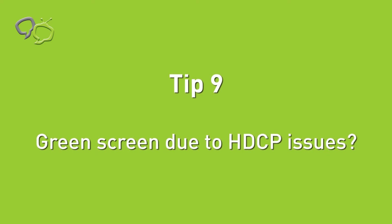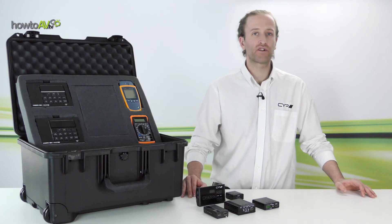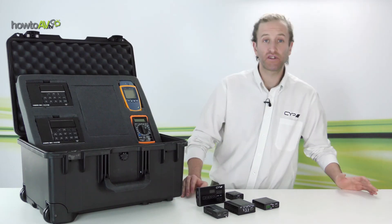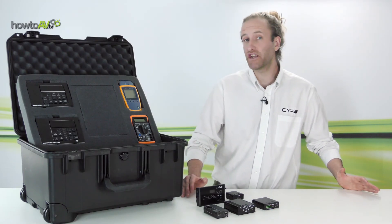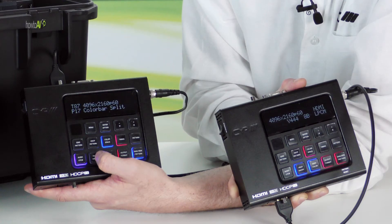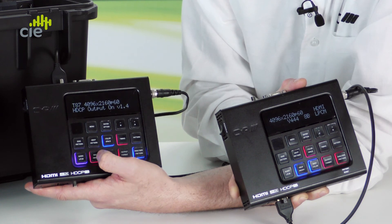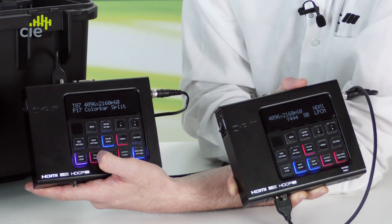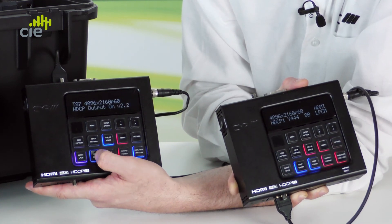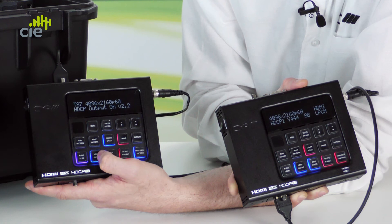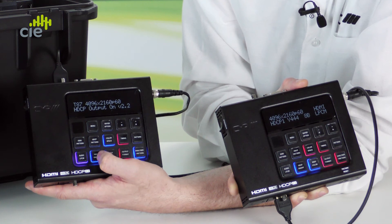If you're experiencing a green screen, you might be experiencing HDCP issues. On the XA4 setup, toggle between no HDCP, HDCP 1.4 and HDCP 2.2 and see if you can replicate the issue.